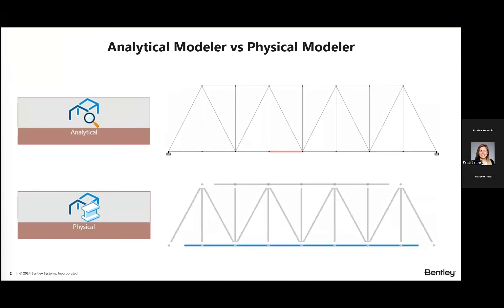We also have a physical modeling workflow, which is used to model your structure using physical elements. The physical modeler is used to draw your elements as they will be physically constructed. The program will then automatically decompose your physical model into an analytical model — basically the finite element model — for the purpose of analysis and design. The physical modeler might be an easier modeling tool, especially for something like this project, so we're going to focus on that today.